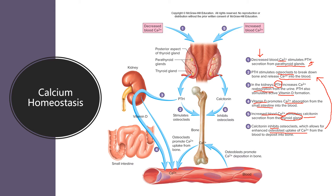When calcitonin is secreted by the thyroid gland, it stops osteoclasts from breaking down bone, and new osteoblasts are introduced to take up calcium and reform the bone. If the body cannot produce new bone cells, growth and repair will stop. This cycle regulates the ongoing balance of bone formation and resorption.